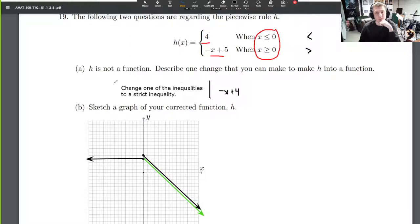So we could: option number one, change one of the inequalities to a strict inequality. Option two, we could change our second equation to negative x plus 4. Option three, we could change the first equation to 5. Option four, we could change both of the inequalities.